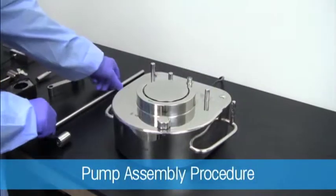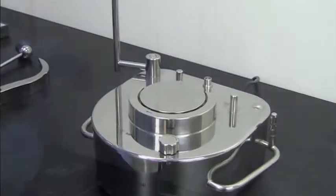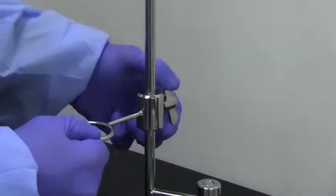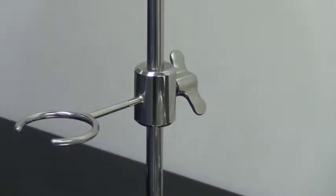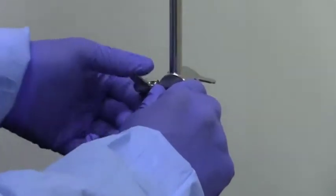To begin, attach the stand to the pump housing. Next, attach the bottle holding ring. Attach the control unit clamp with the convenient front symbol facing forward.